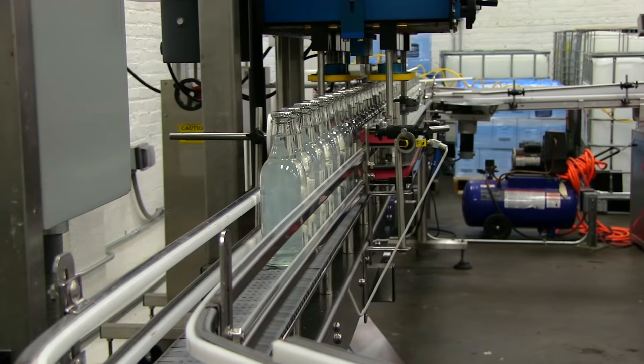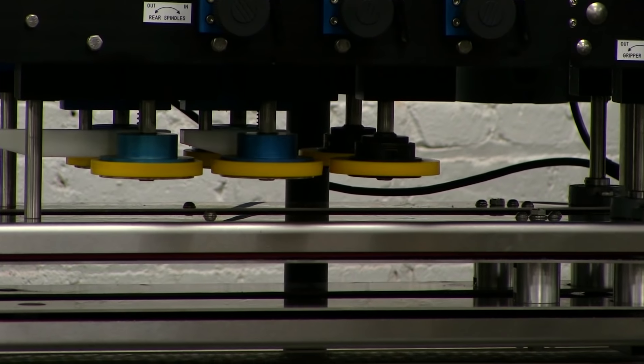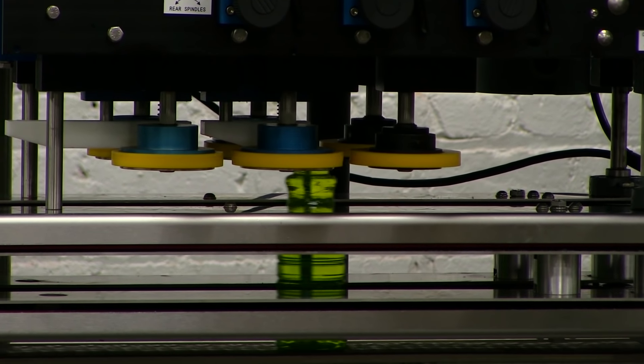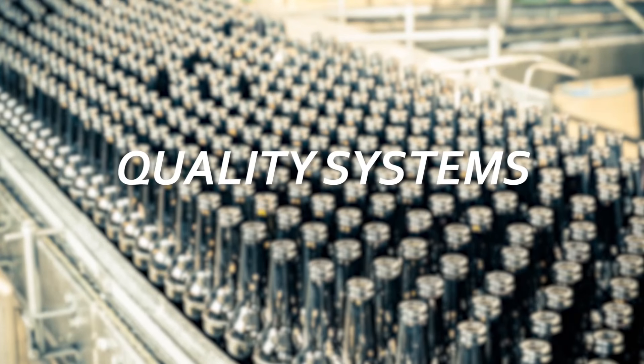Once you have your scaled up formula, how do you make sure it's going to be the exact same product each time it's made, even if it's at different locations with months between productions? Quality systems, that's how.